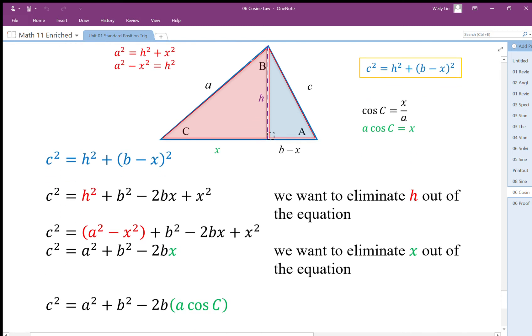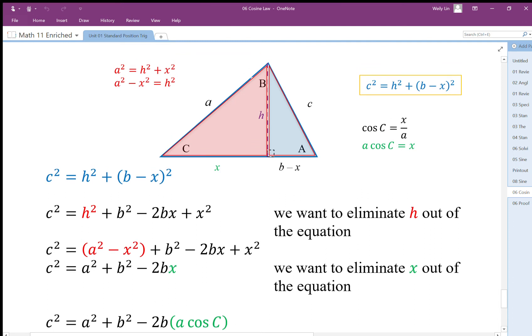Starting with the blue triangle, we have c² equals h² plus (b - x)². We're going to replace that h² here with a² minus x².